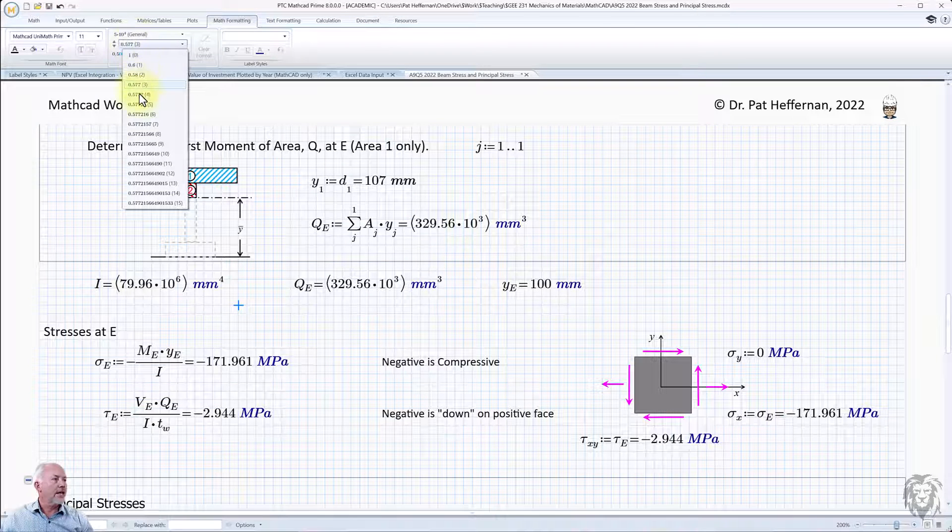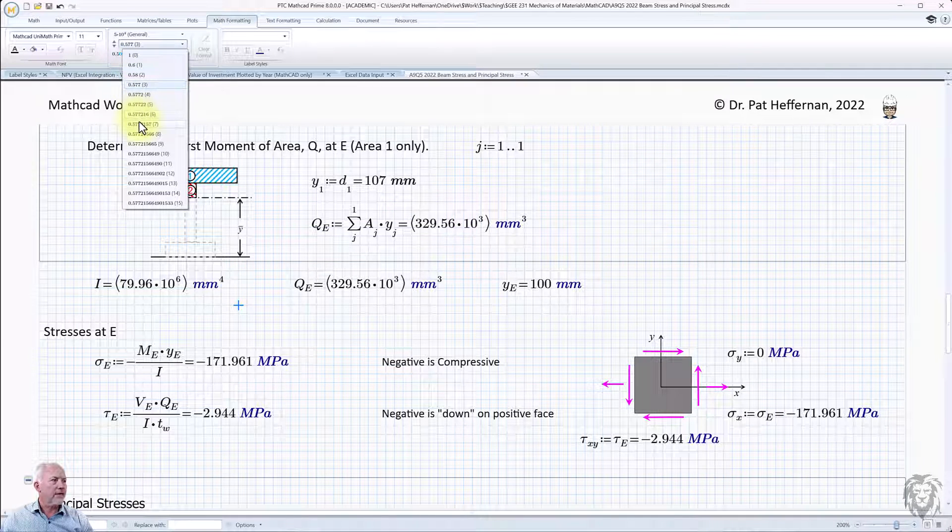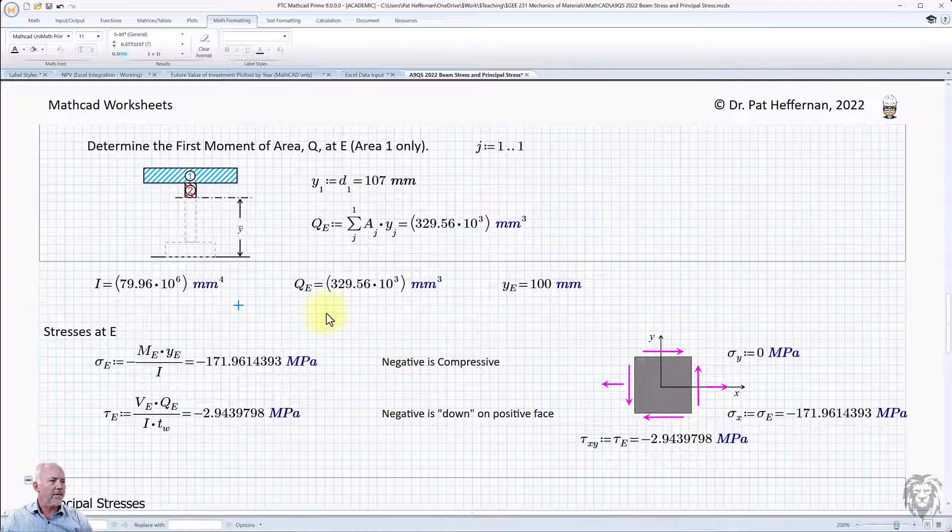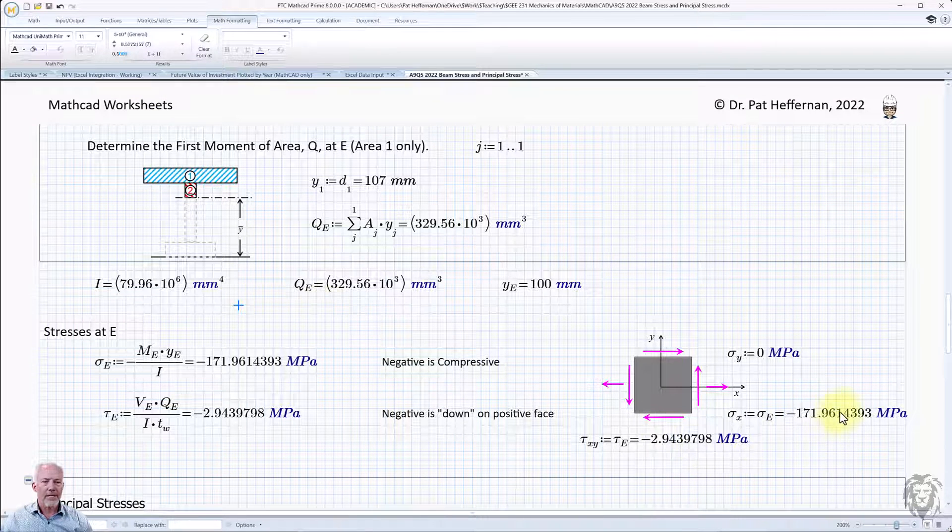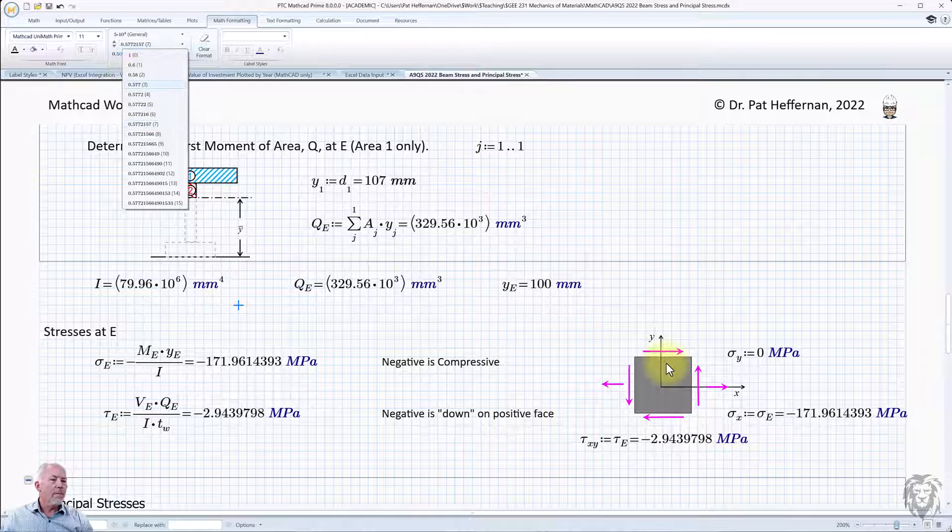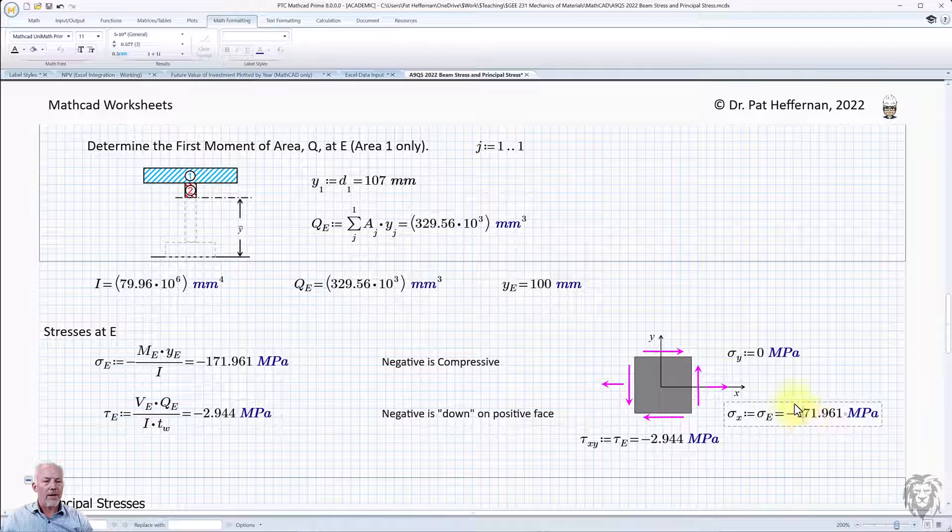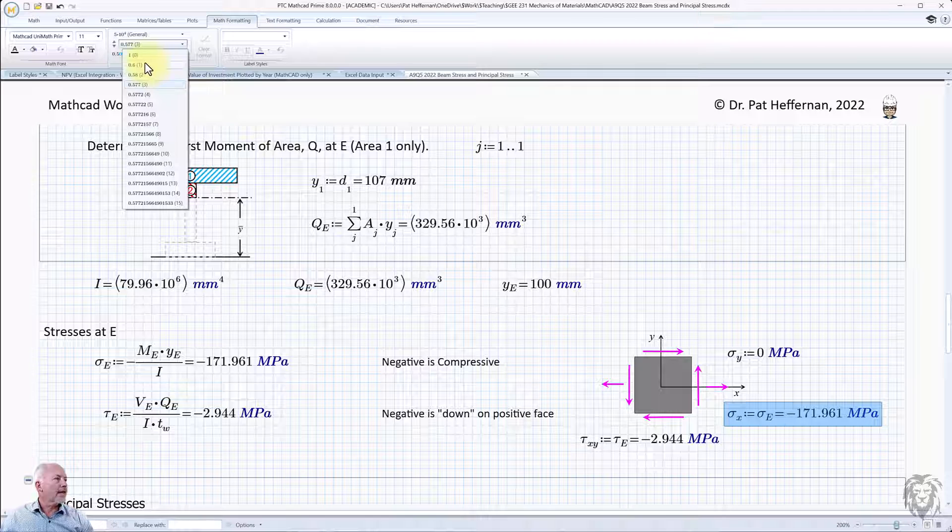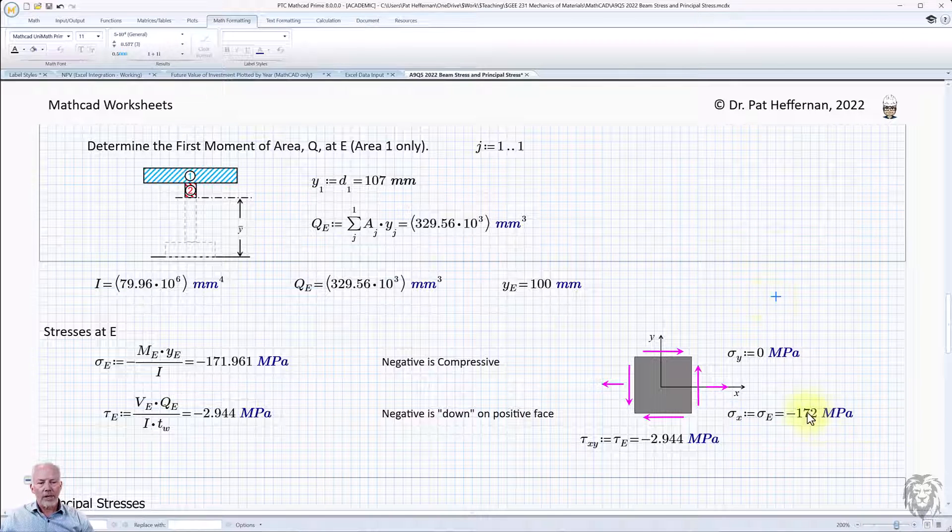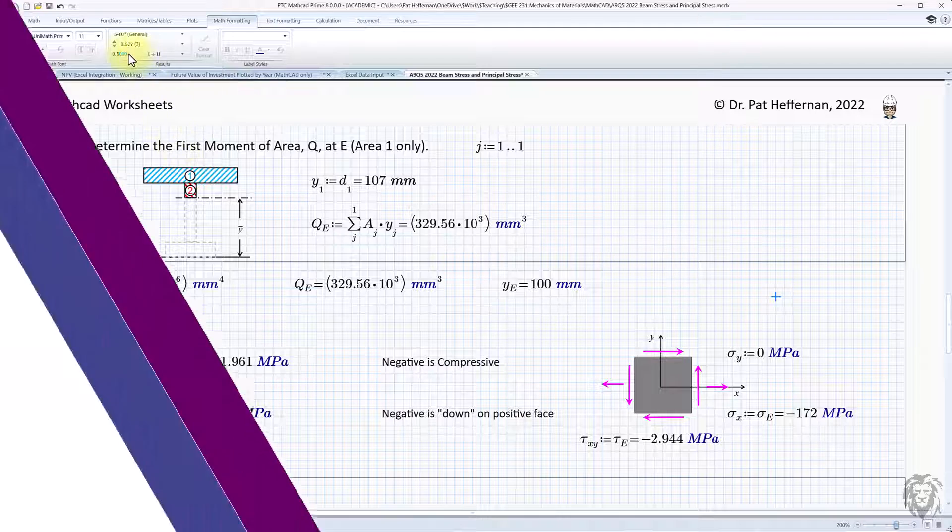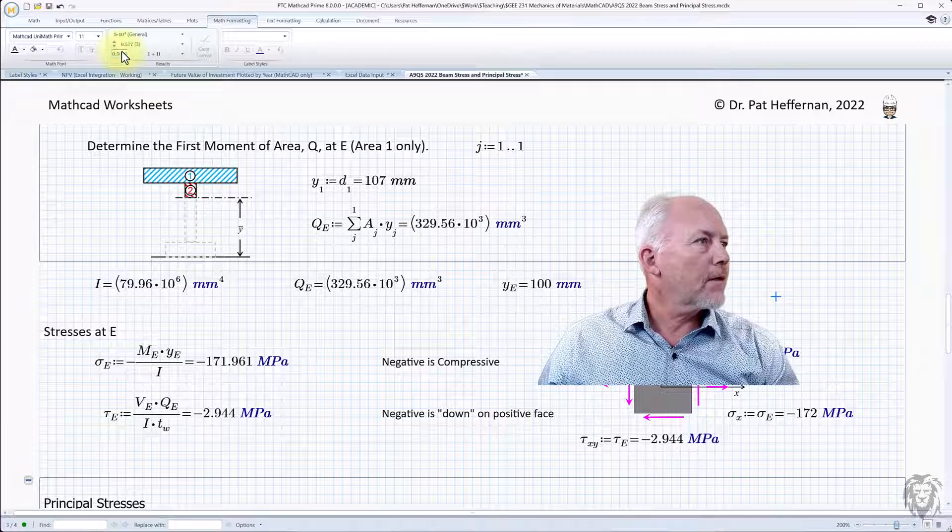Now, the other thing you can do is change the number of significant digits. So, like, if I were to go up to something ridiculous like seven, again, it's changing the default because I don't have anything specifically chosen. Probably looks a little bit ridiculous. But what it might be is that, say, on a particular number, you're happy with the three digits, but you want that to be a single digit. Well, we can do that by selecting it and applying it to the individual one.